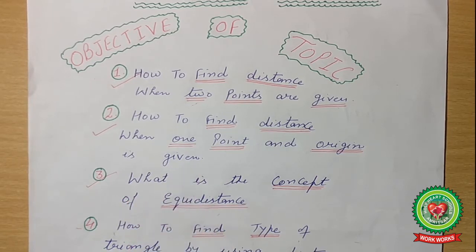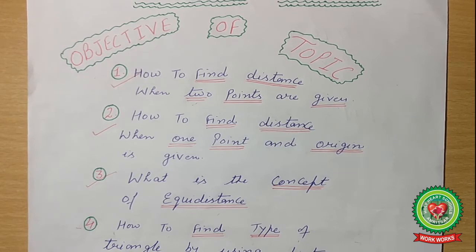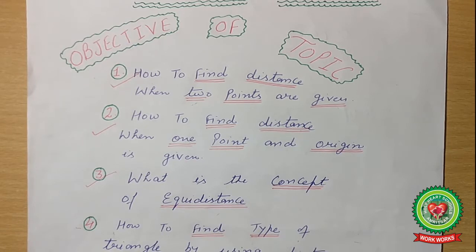In our previous lecture, we completed our third objective: the concept of equidistance. We learned what equidistance means and how we find out whether a point is equidistant from two other points.